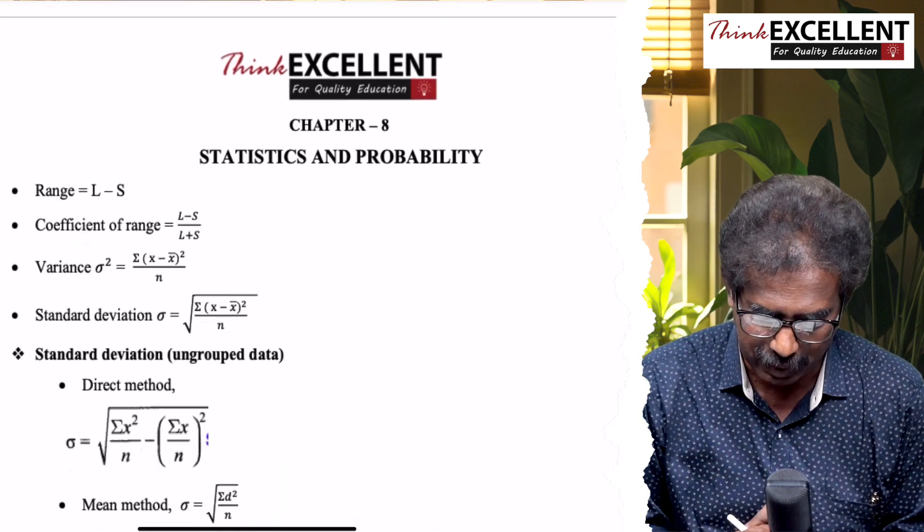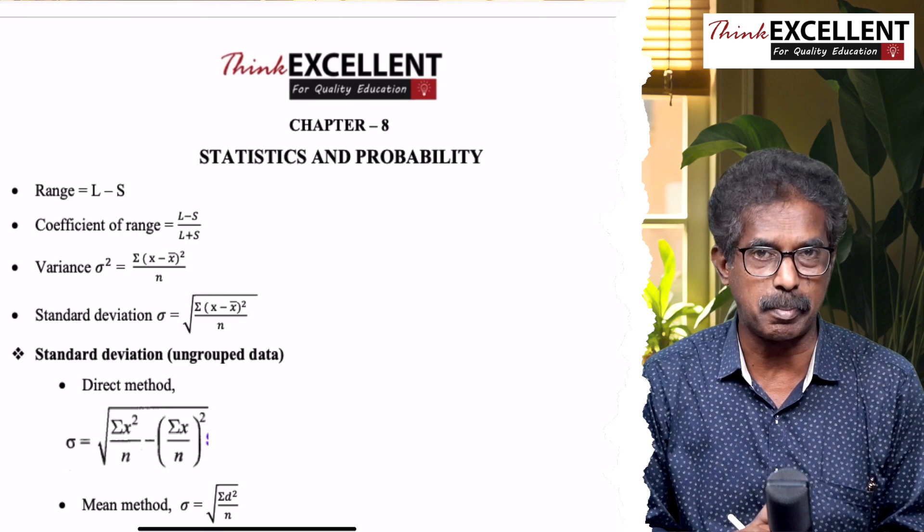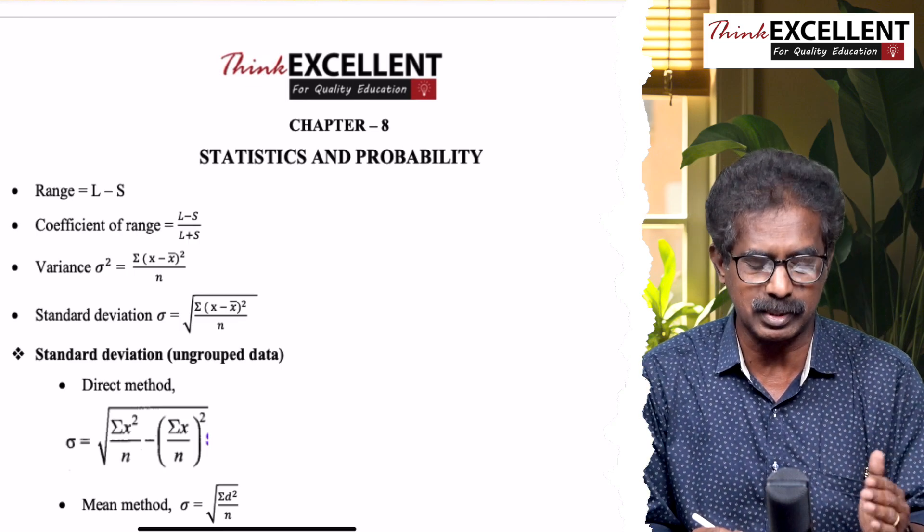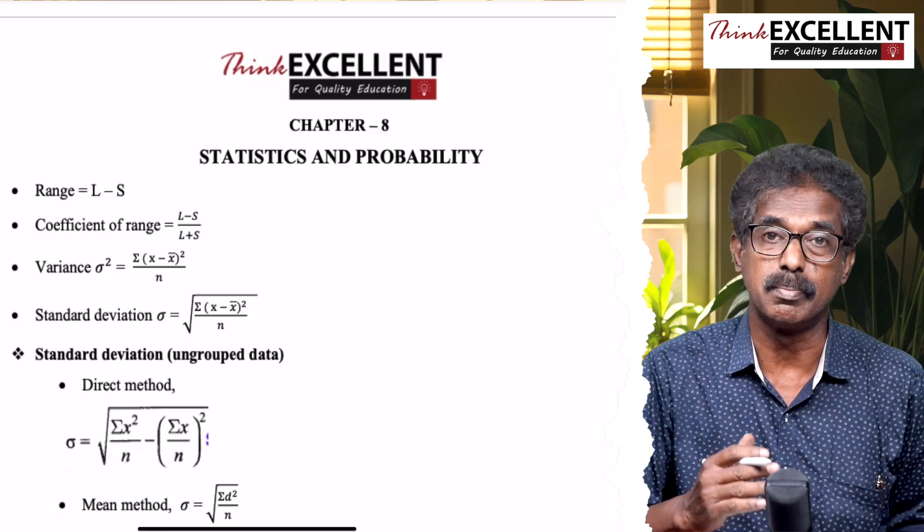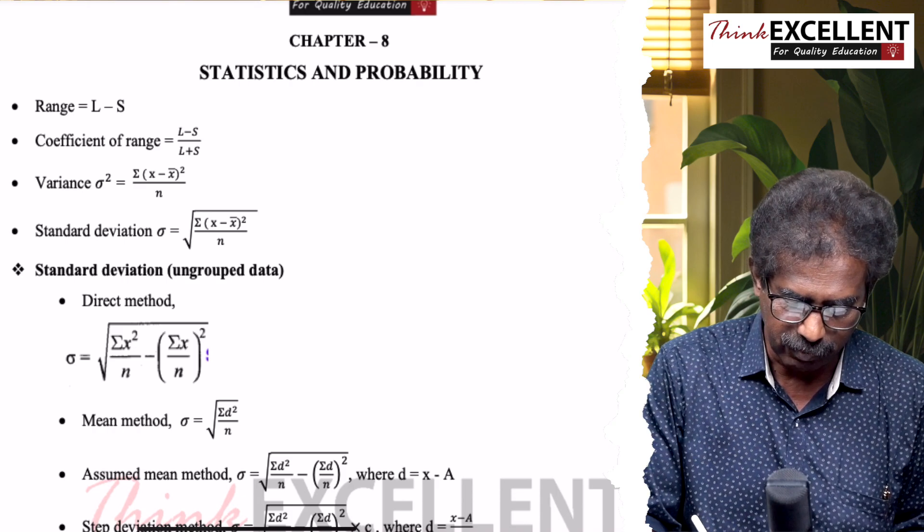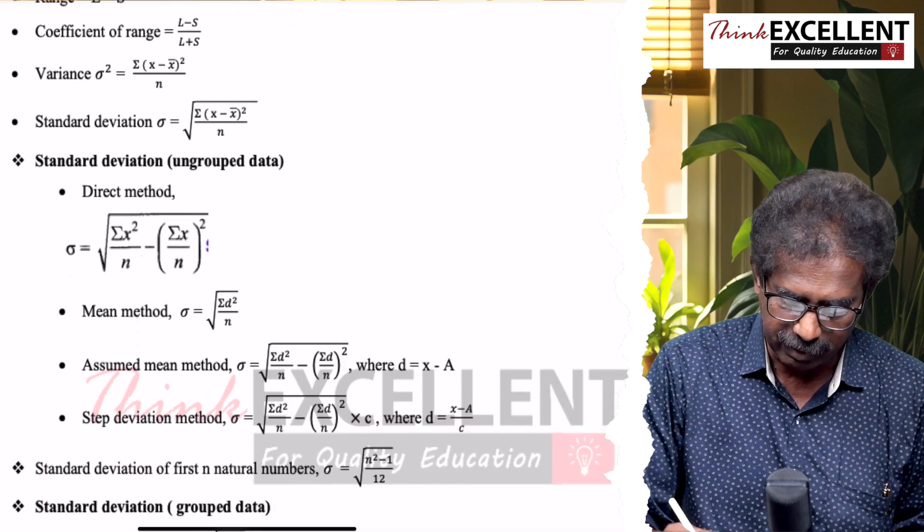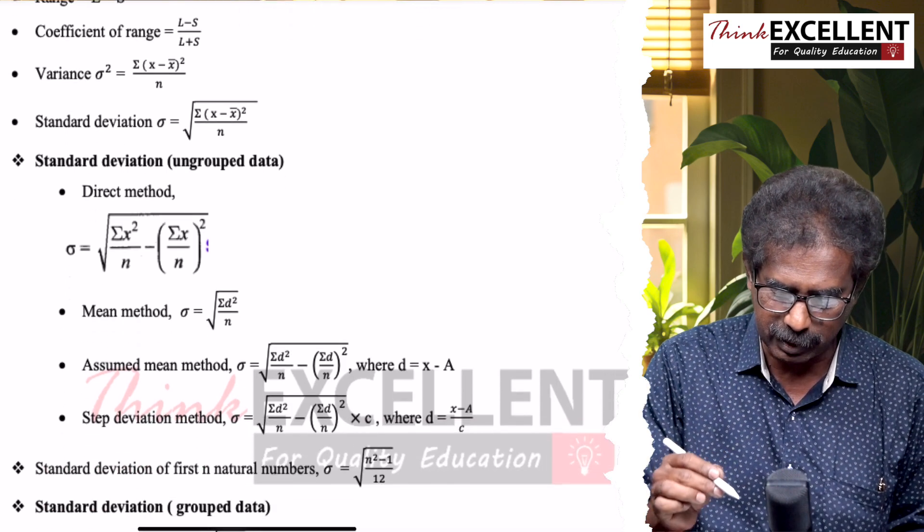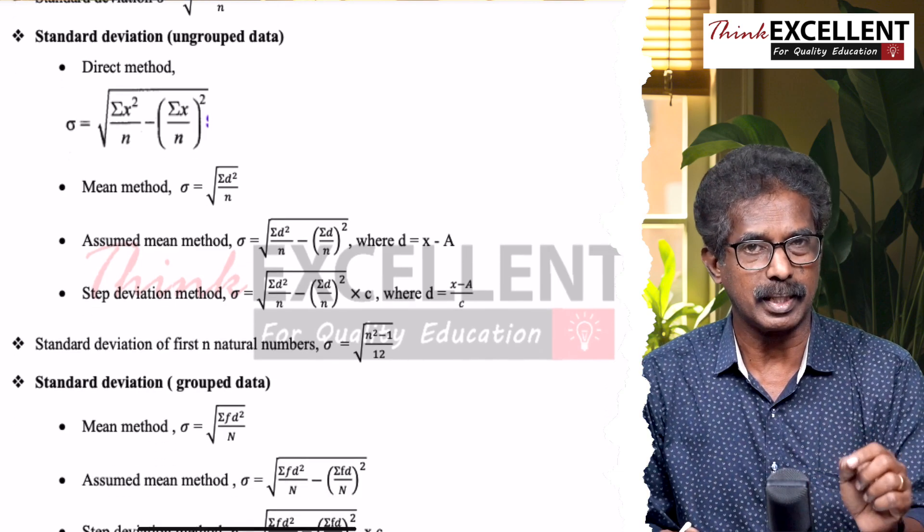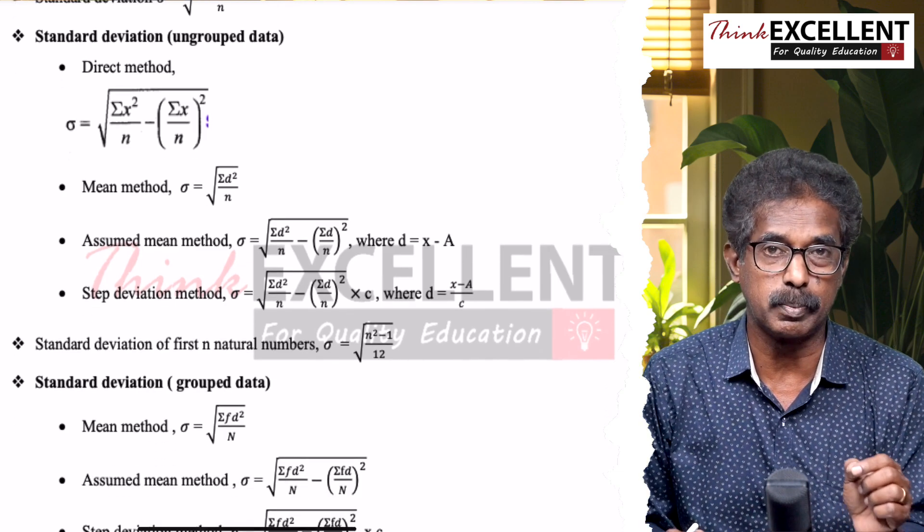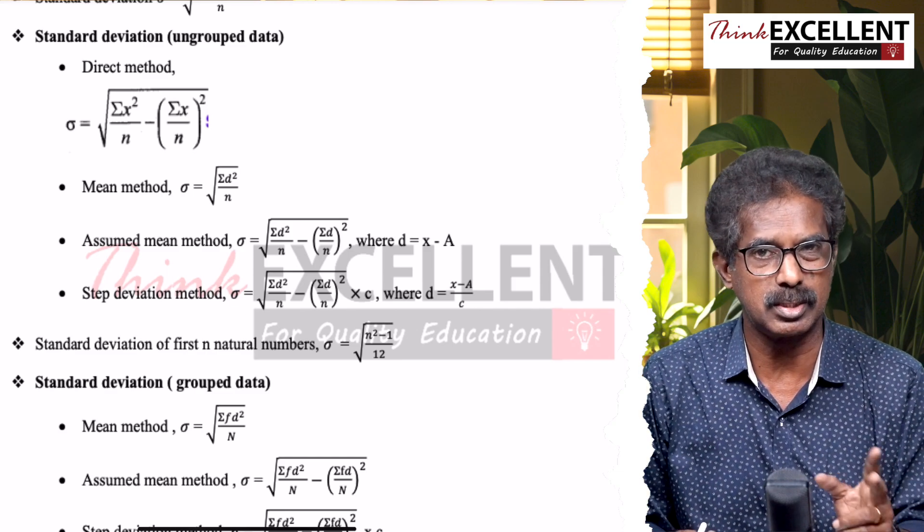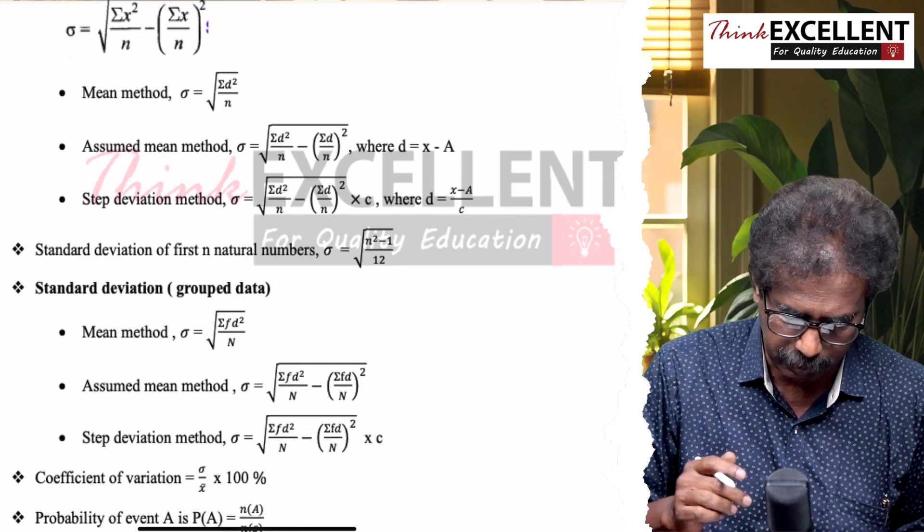Then the last chapter, chapter number eight: Statistics and Probability. First, range: L−S, largest minus smallest. Coefficient of range: (L−S)/(L+S). Then variance, standard deviation. Different methods - you can use step deviation, that is the specified method. But examination, standard deviation, if you work out it's good. But examination, time consuming - choose wisely.